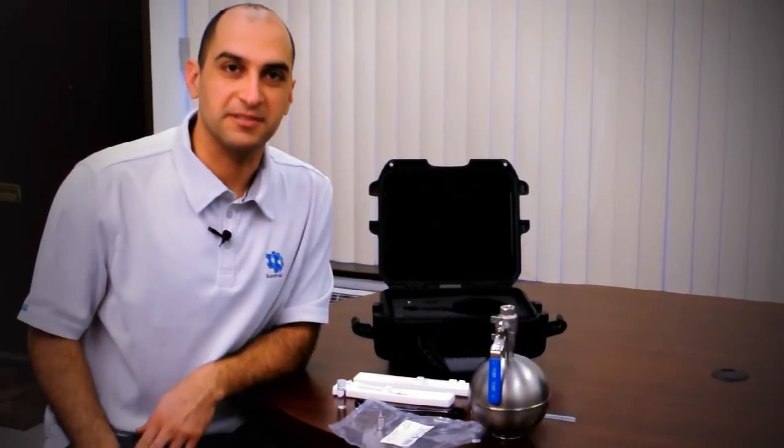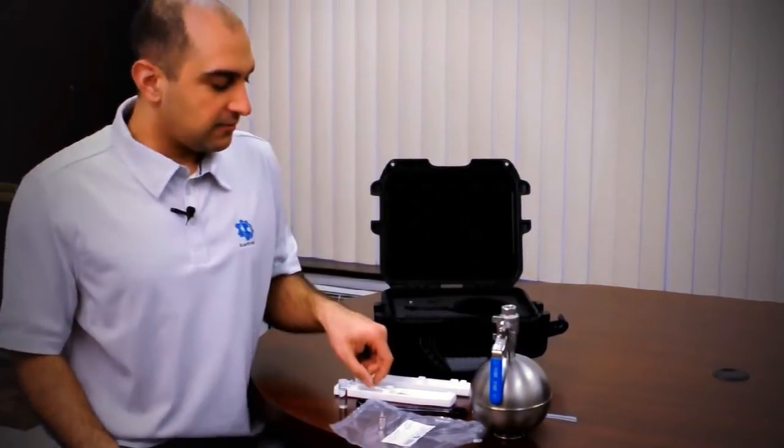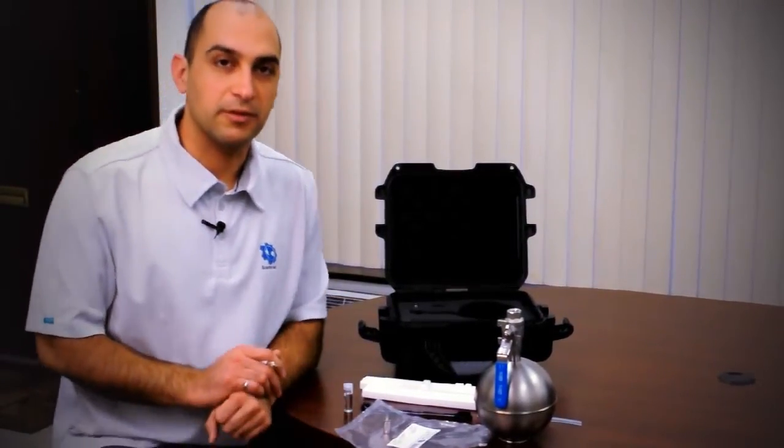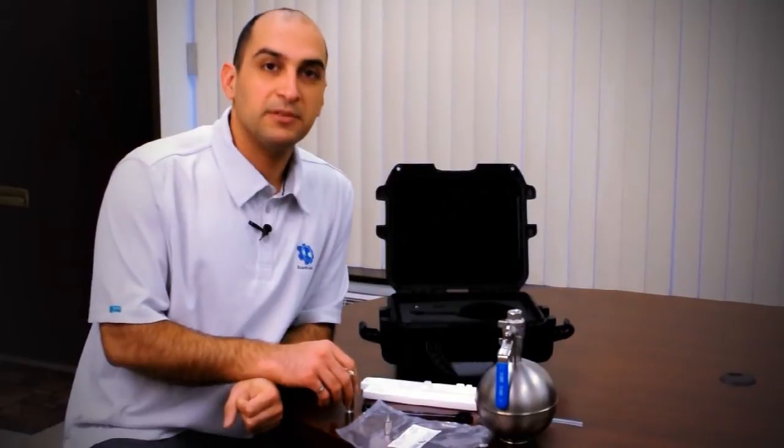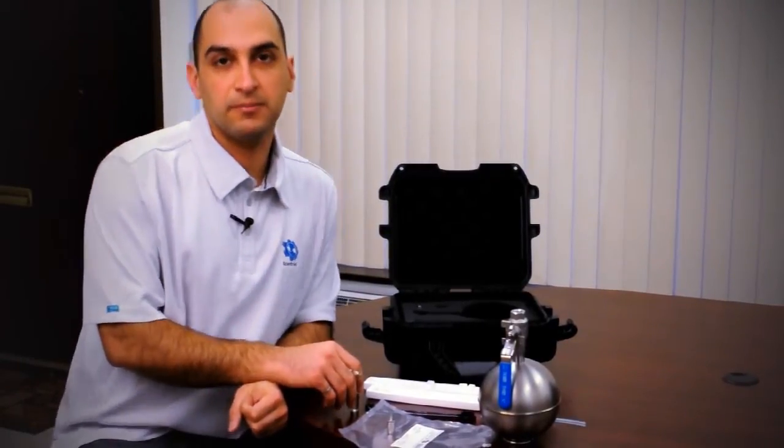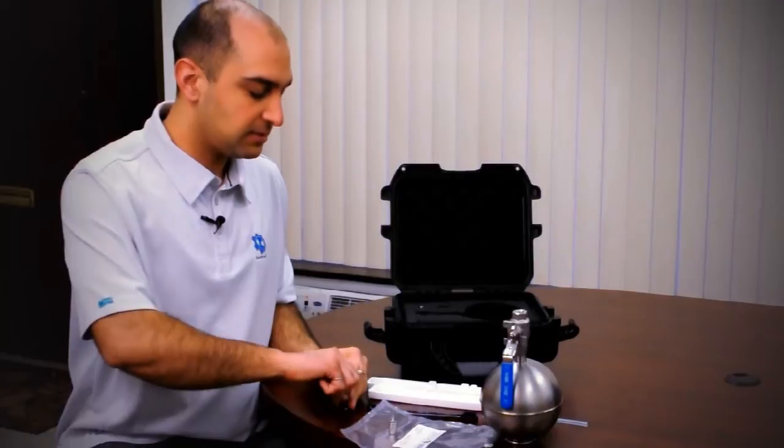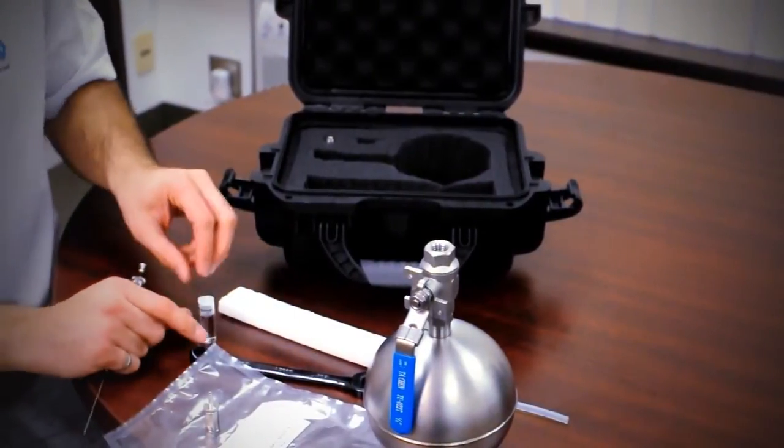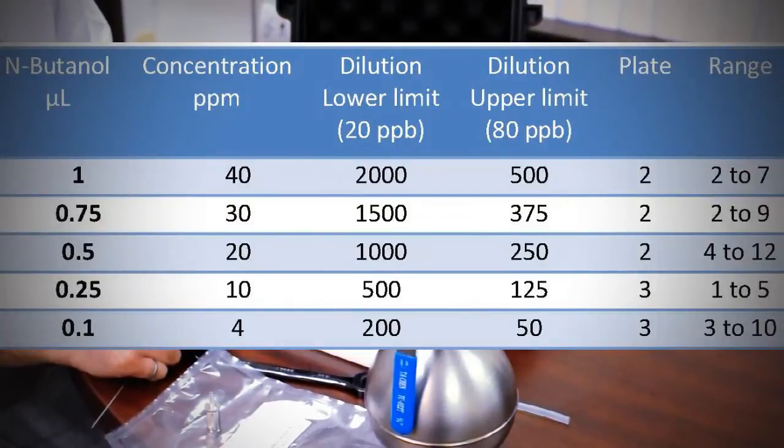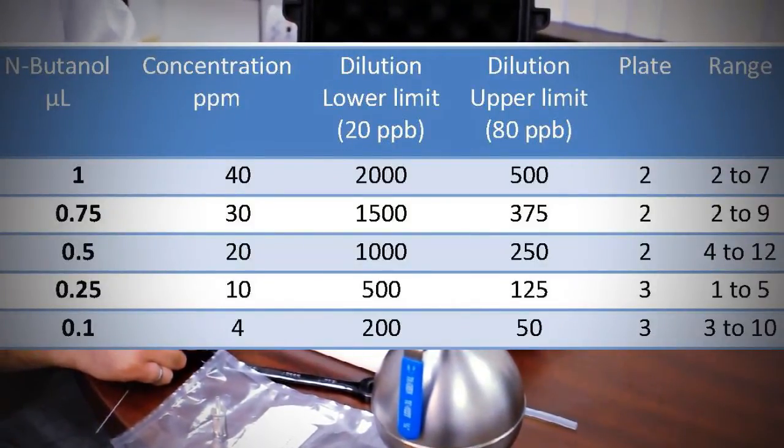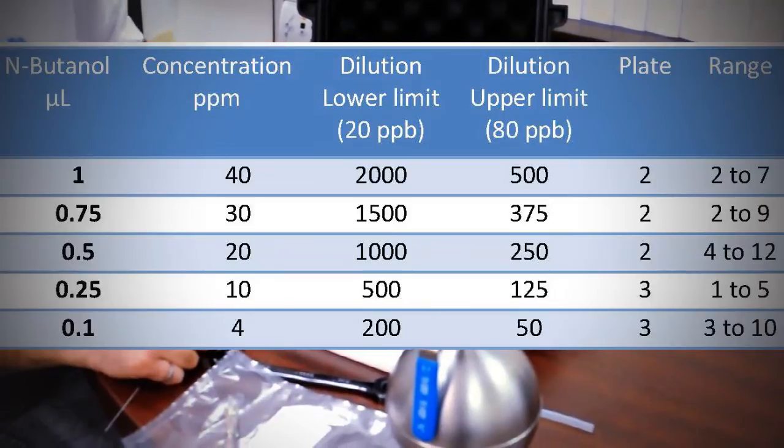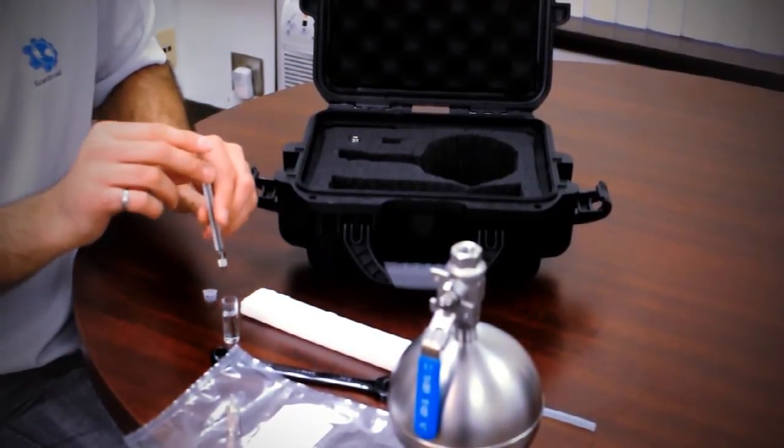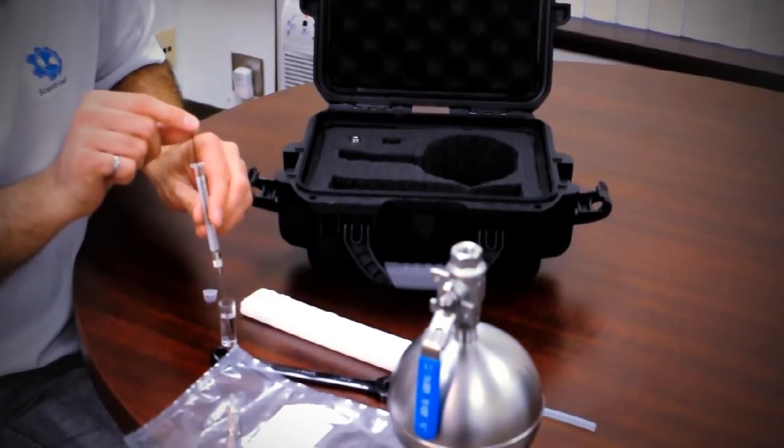Let's cover the operations of this device. First, we need to take out the N-butanol according to our requirement. For example, in this case we want to make 25 ppm, which according to our chart means half a microliter of N-butanol. Take off the lid and carefully draw out half a microliter.